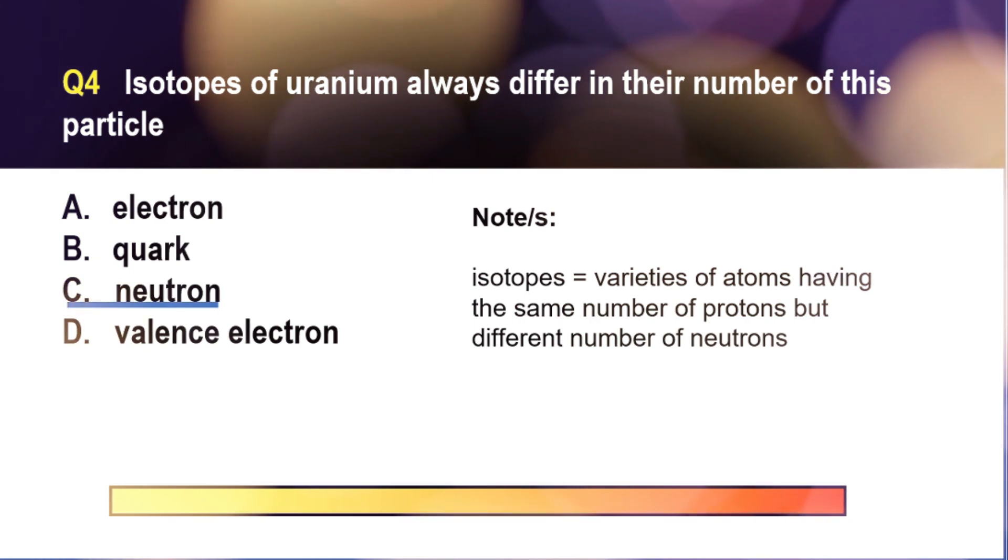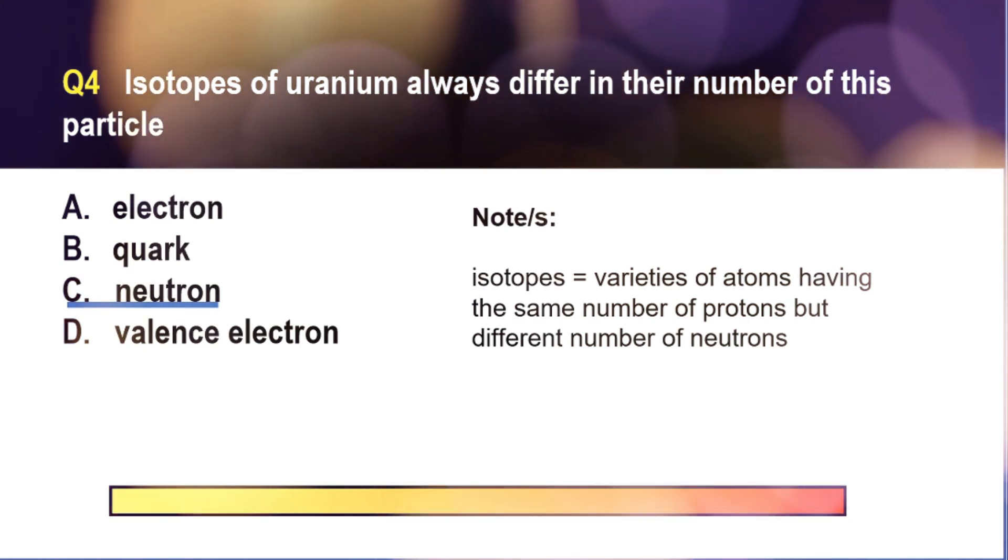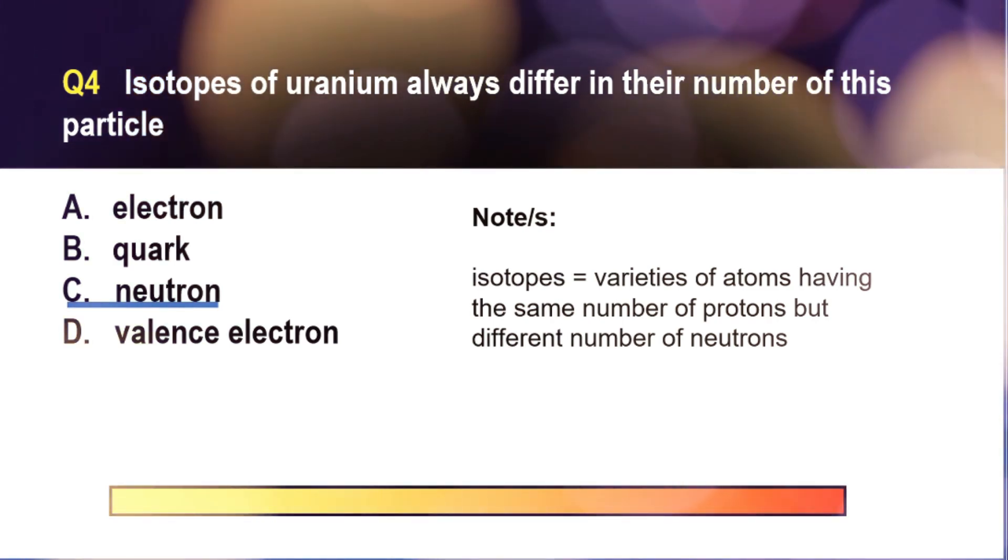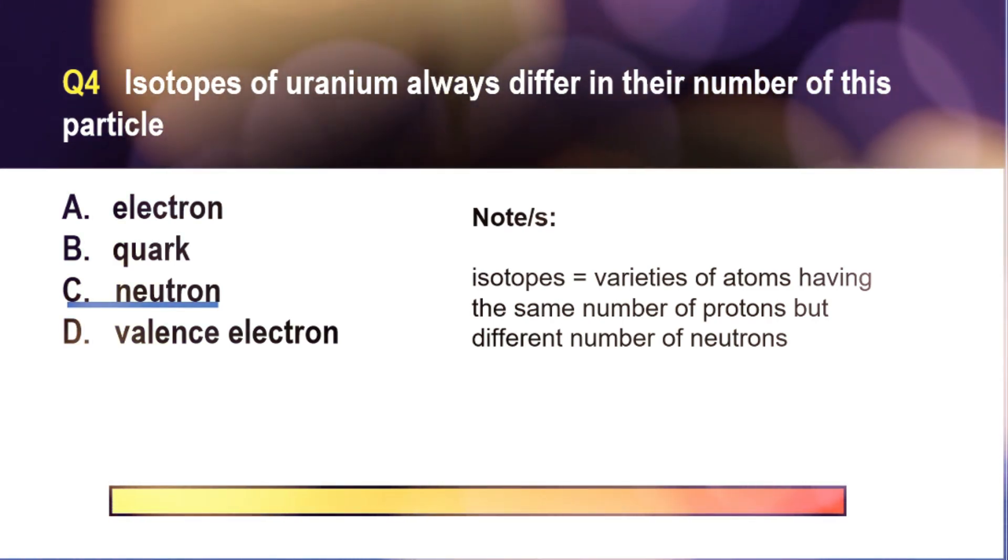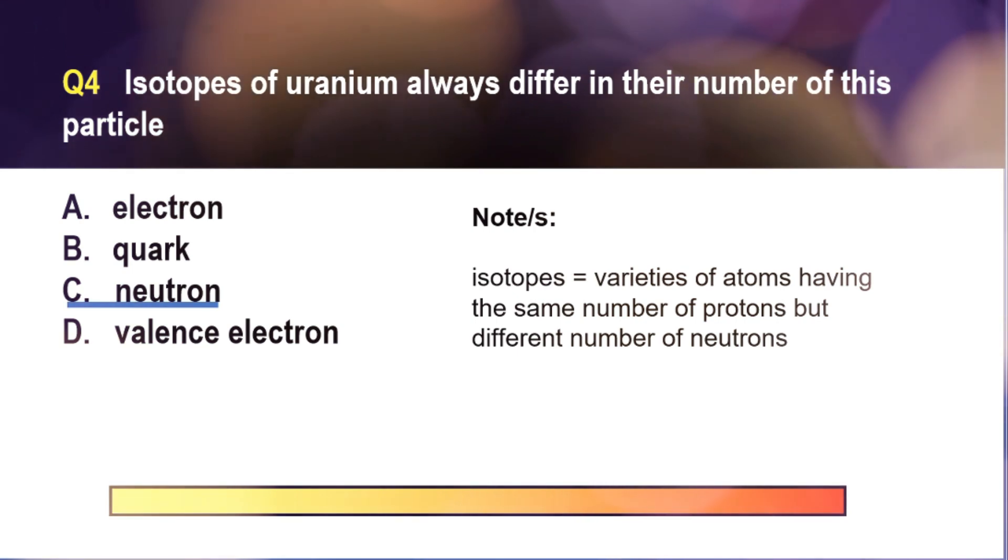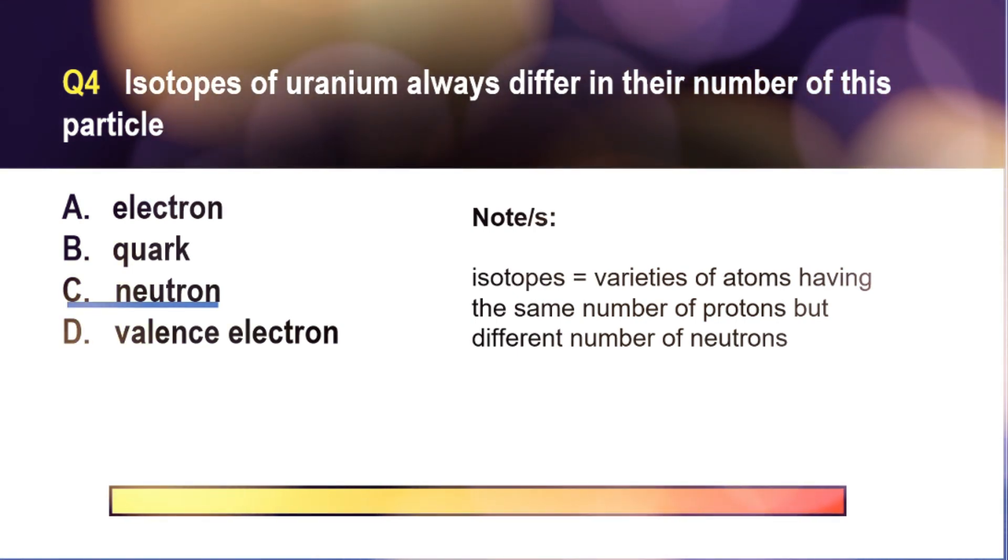For instance, two of the isotopes of carbon are carbon-12 and carbon-14. Both carbon-12 and carbon-14 have six protons, but carbon-12 has six neutrons and carbon-14 has eight neutrons. Carbon-12 is a stable isotope, while carbon-14 is a radioactive isotope.